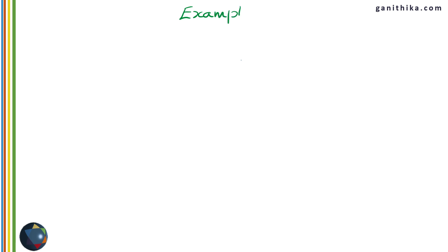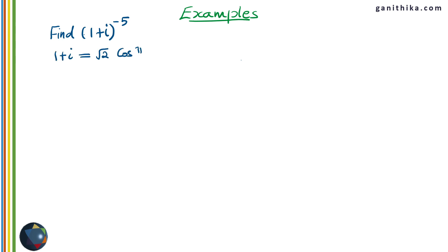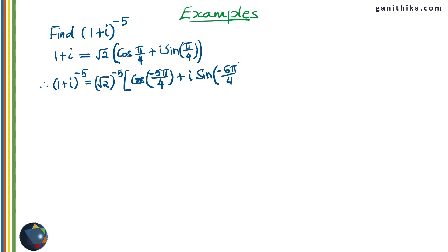For the second example, let's find (1 + i)^(−5). This is a negative power, which is not easy to expand directly, so we use De Moivre's theorem. First, convert 1 + i to polar form. Then raise the complex number to the power of −5, distributing the power into the modulus as an exponent and into the argument as a product, according to the theorem.